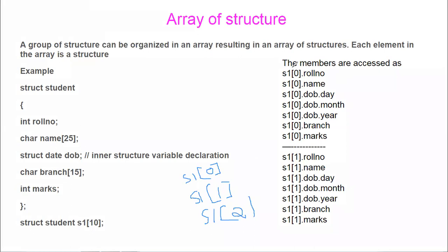How you can access the members: the index should come here, the index is only for the name of the structure, not for the member variable. So it is s1[0].rollNumber, then s1[0].name. For accessing a nested structure within this array of structure, it is s1[0].dob.day the same way. For the next element: s1[1].rollNumber — this is one record, this is another record.